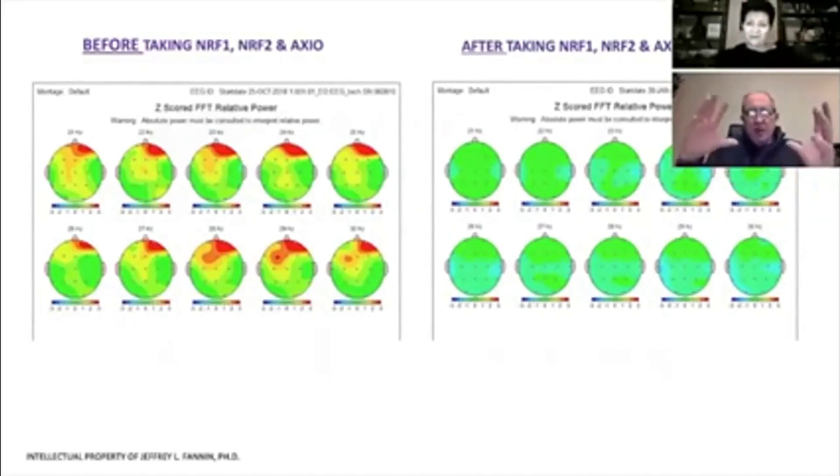It's pulling in all of this energy and information from the morphogenetic field. I won't take time to explain what that is, but you can look it up. Basically, by giving your patient the NRF2 activator, the NRF1 activator, and the Axio in 12 days, literally the cells have started to repair themselves enough.